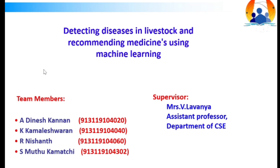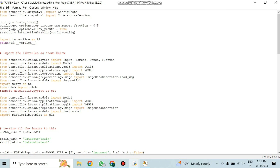Our project aims to build software capable of detecting any type of livestock animal disease and providing medicinal prescriptions. It is adaptable in both rural and village areas, built using image processing methods, and achieves about 97% accuracy rate.